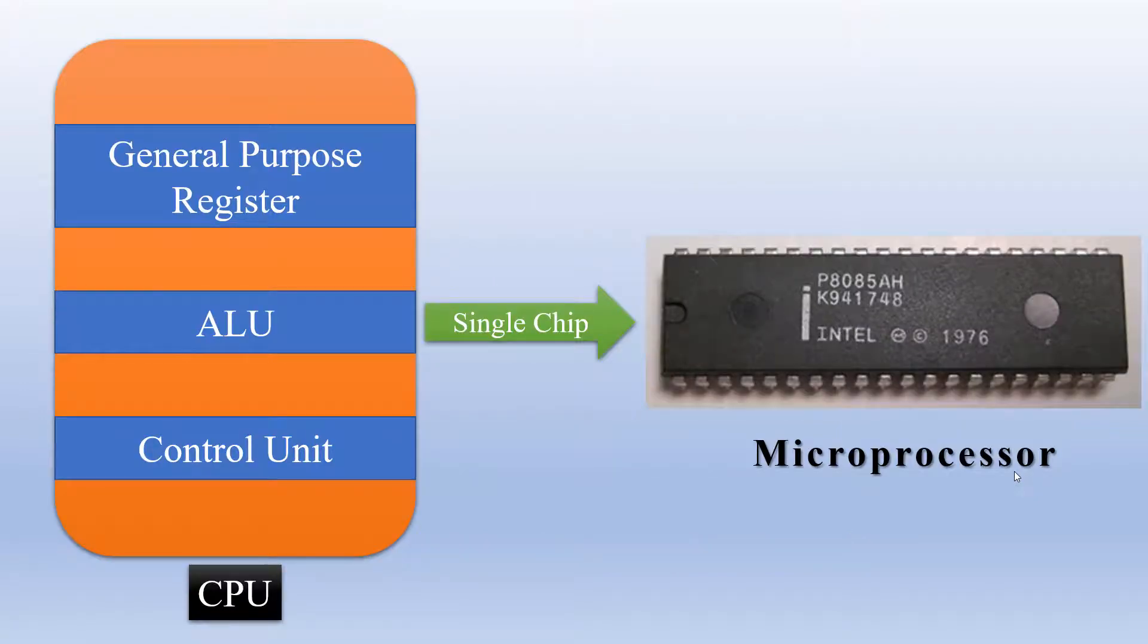Now when you have the whole central processing unit on a single chip, then it is called a microprocessor. 8085 is an example of a microprocessor which has got the general purpose registers, arithmetic and logic unit, and the control unit, and everything is put on a single integrated circuit IC chip.